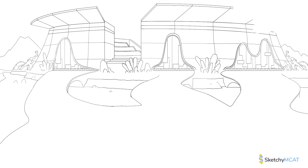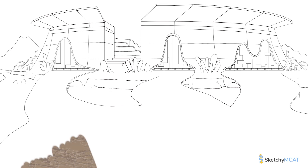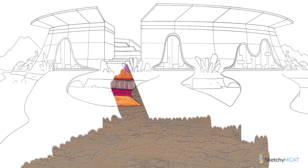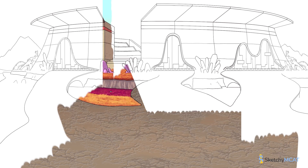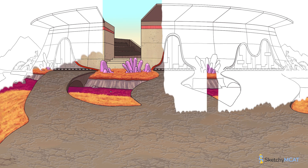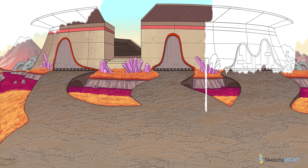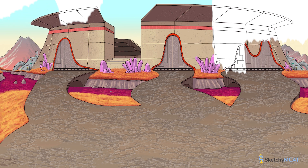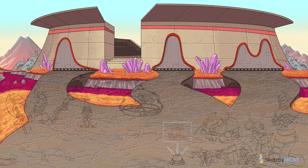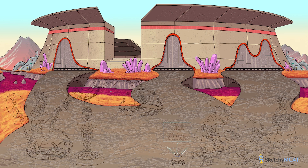Before we jump into the three patterns of selection, remember that natural selection increases the prevalence of heritable traits that improve an organism's chance of surviving and reproducing. Because natural selection is a type of evolution, it can only occur if there's variation in the population. To describe the type of selection occurring, let's classify varied phenotypes into two broad categories: extreme and intermediate.